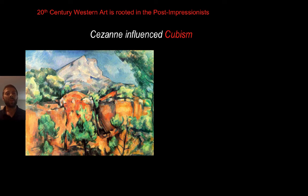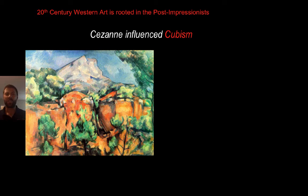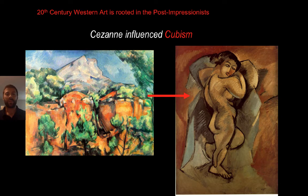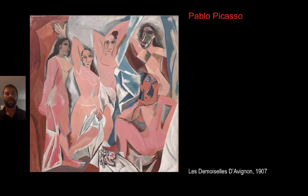Cézanne is very interested in his brush strokes, in collapsing space while creating space, using color to create fields of space, and how the colors are working together with space to produce a single image. He's not so much interested in the landscape itself — the landscape becomes more of a context that allows him to manipulate color and form the way he wants. 20th century modern art is going to be rooted in the post-impressionists. We're going to see someone like Cézanne — because of his strange use of space — influencing something like Cubism. There's an example of Cubism, and another example with the very famous painter Pablo Picasso, who dabbled with Cubism.